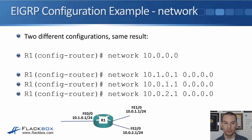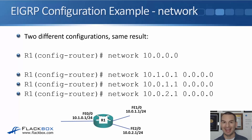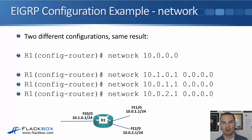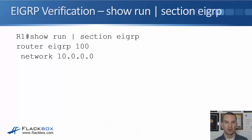Another way to achieve the same result is using /32 wildcard masks. For example: 'network 10.1.0.1 0.0.0.0', 'network 10.0.1.1 0.0.0.0', and 'network 10.0.2.1 0.0.0.0' — matching each interface by its exact IP address. The networks that will be advertised are still /24, because that's what's configured on the interface, not the /32 used in the network command. There are multiple valid ways to achieve the same effect.